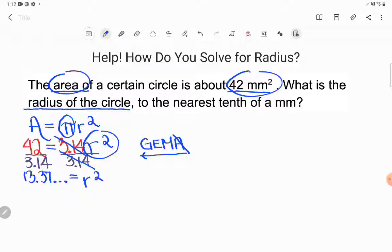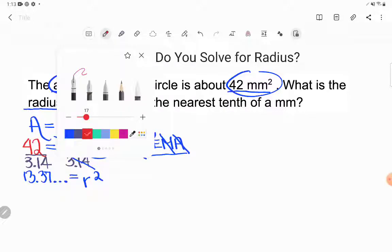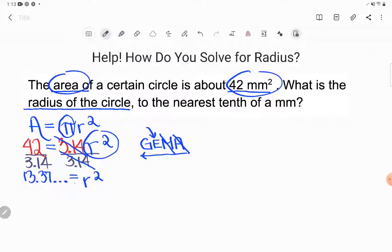Now a lot of students would stop right here. Careful, don't stop right here. R is not alone yet. We have to get rid of that square. And in fact, if we were doing that order of operations backwards, we see the next thing you move after multiplying and dividing is exponents. We've got to get rid of that exponent. Now, in order to do that, you need to know the opposite of squaring. The opposite of squaring is square rooting. Let's square root the right-hand side of my equation.